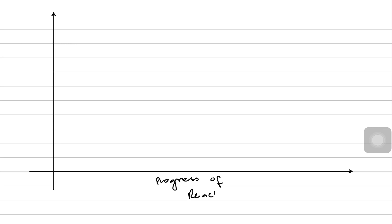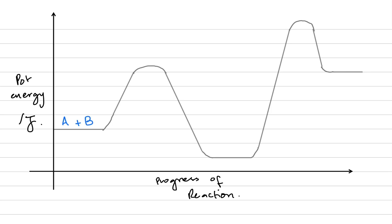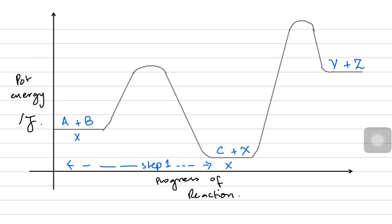Now let's analyze a more detailed energy profile diagram with the progress of reaction on the x-axis and the potential energy on the y-axis, with energy units in joules. Imagine A and B react to make C, and then C reacts with X to make Y and Z — it's a combination of two energy profile diagrams. A + B reacting to form C and X is step one, and from C + X to Y + Z is step two. The first peak corresponds to step one, the second peak to step two.